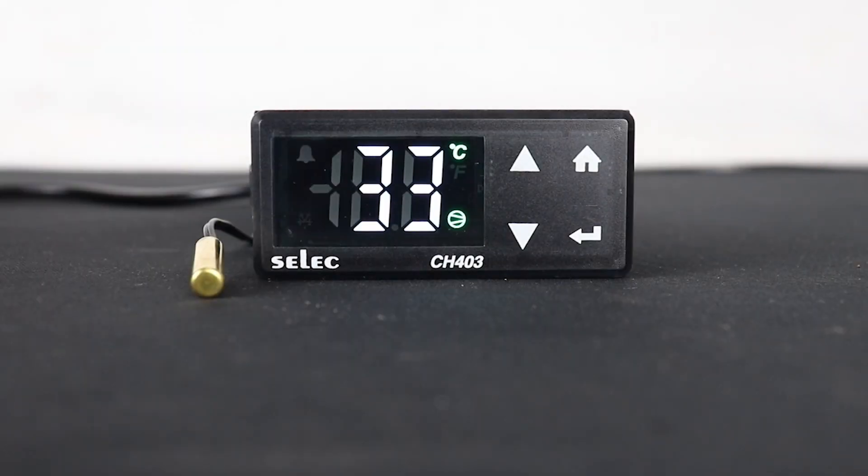Hello everyone, in this video we will program the cooling controller CH403B-1-NTC through different parameters. As we can see, the controller has a brass made NTC sensor at the left side of the product unit and is currently displaying the present ambient temperature value of 33 degrees Celsius.